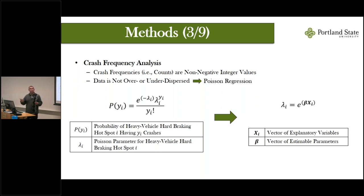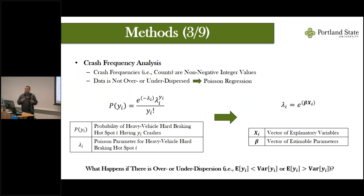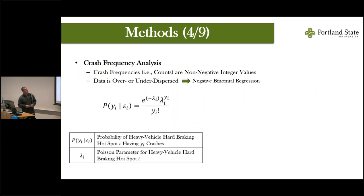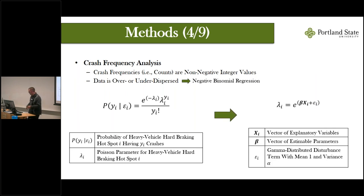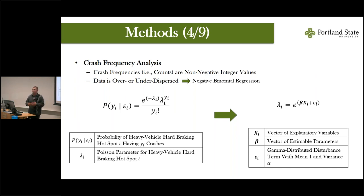A key limitation of Poisson regression is that it assumes the expected mean and variance must be equal. If this assumption isn't met, results will be biased and standard errors incorrect. We can test this by calculating a theta value: if theta equals one the assumptions are met; if greater or less than one, the data is over- or under-dispersed. Alternatively, we can fit a negative binomial regression model — the most common method to account for data dispersion — which adds a gamma-distributed disturbance term, allowing the mean and variance to differ. The resulting alpha parameter tests whether we need this model.